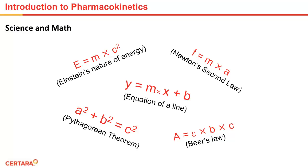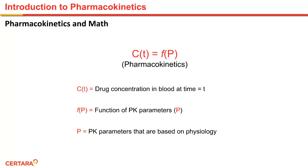Pharmacokinetics is no different. There is a math that is linked to the science of how the body handles the drug. In pharmacokinetics, we have an equation that explains the concentration of drug in the body at each time point. This equation is a function of a set of parameters. Concentration at any time t is equal to a function of a set of pharmacokinetic parameters. C(t) is the drug concentration at any time t, and f(P) is a function of pharmacokinetic parameters. And these pharmacokinetic parameters are based on human physiology.